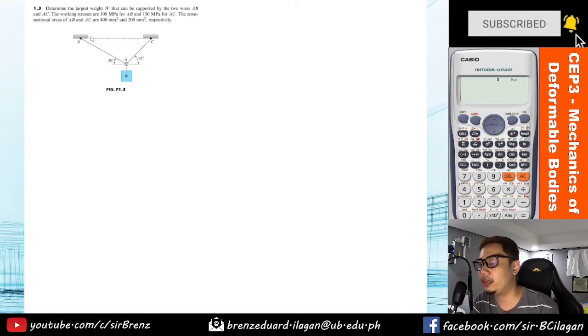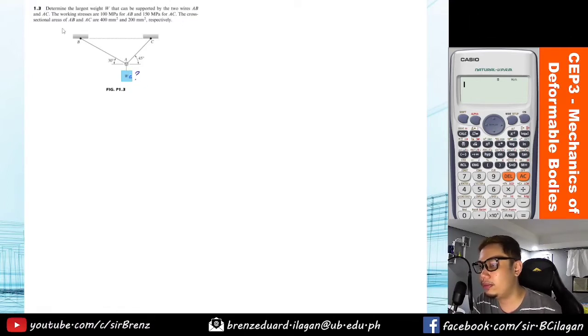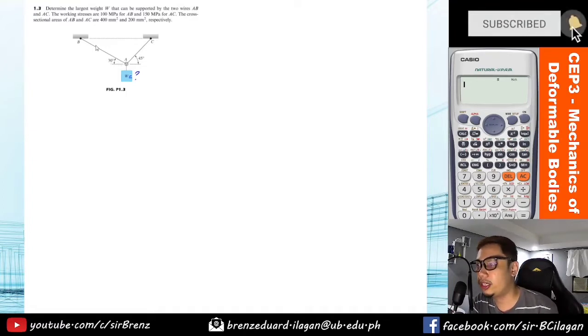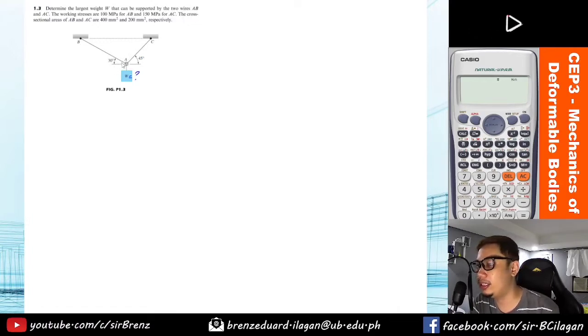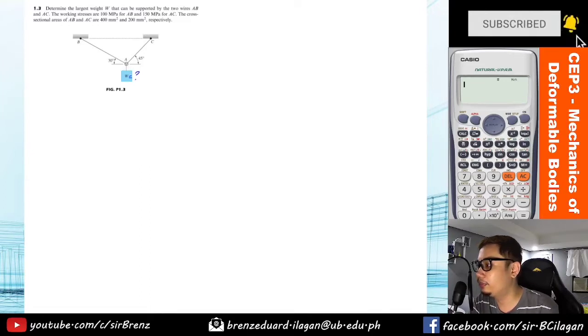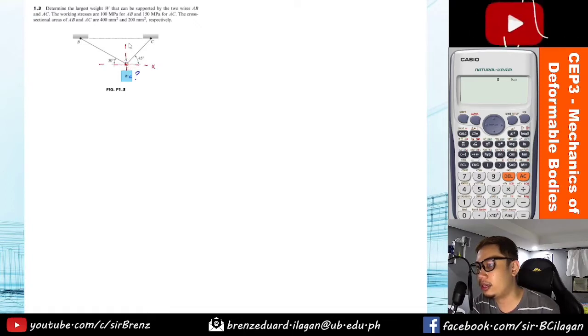This is the unknown in the problem. Before that, let's create the free body diagram and then identify the forces acting in AB and AC. Since this is a two-wire system, we know that when there's a wire the load is in tensile force. So let's consider joint A. Let me draw the x and y axis.